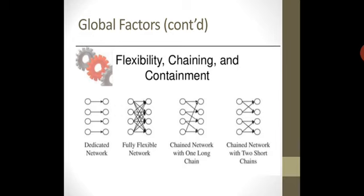Using diagrams as examples: the first diagram is simple and straightforward — a dedicated network, where your supply chains are clearly defined. Let's say there are four types of products made by a company and four supply chains have been defined, and every network is only overseeing that one product from supplier to manufacturer to wholesaler to retailer. This is a less flexible supply chain because you can't do chaining properly.